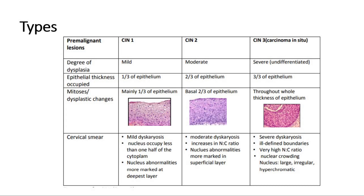For type 1, the dysplastic changes occupy around one third of the epithelial thickness; type 2 occupies two thirds; and type 3 occupies almost the whole of the epithelium. You can see in the picture the dysplastic changes occupying one third, two thirds, and the whole thickness in each grade.